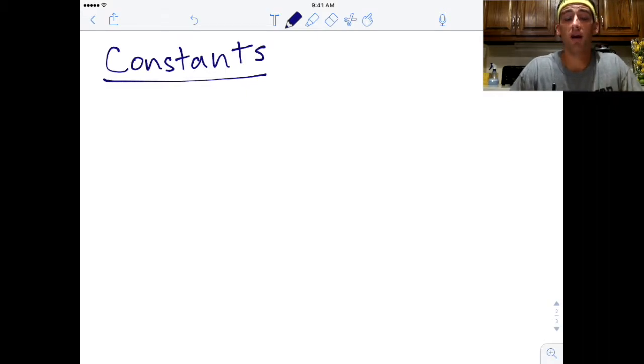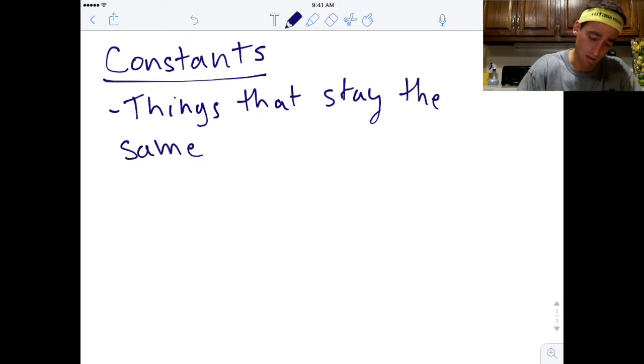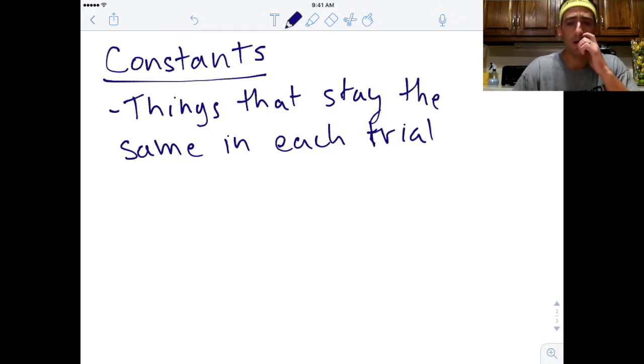We need to find a couple of constants. Now constants are things that stay the same in each trial. We know that we're intentionally changing the independent variable. Hopefully that's causing a change in the dependent variable, because we're going to measure that change. But then there's going to be some things that are important to keep constant.